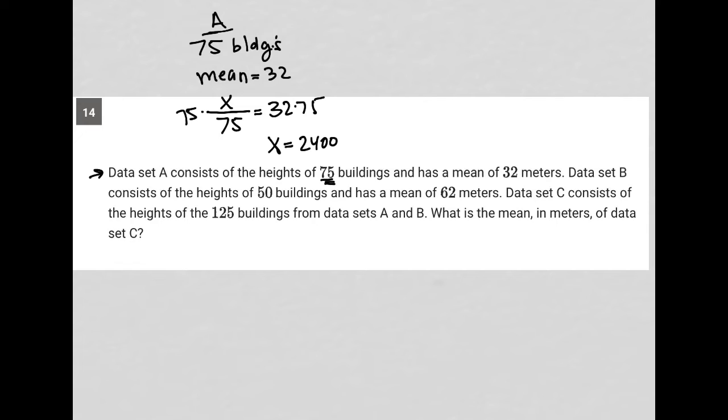Next sentence: data set B consists of the heights of 50 buildings and has a mean of 62 meters. Data set C consists of the heights of the 125 buildings from data sets A and B. What is the mean in meters of data set C?